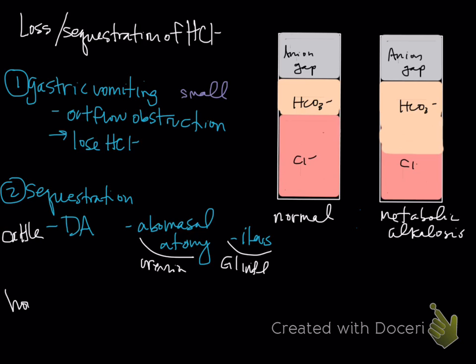In horses, we tend to see ileus. This is also due to GI inflammation — really a proximal inflammation — resulting in ileus and a trapping of hydrochloric acid. These animals have a low chloride, usually an absolute decrease in chloride. The sodium may also be low, although it may be normal or high.